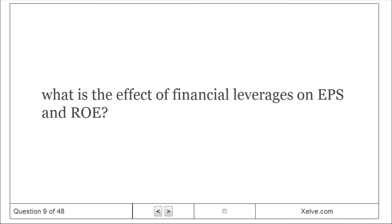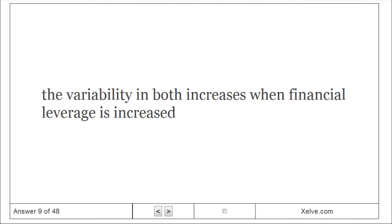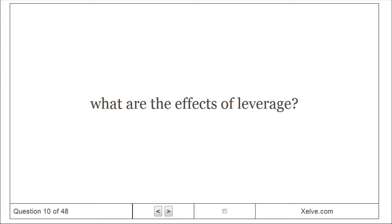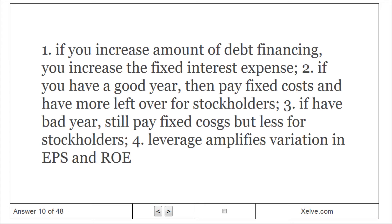What is the effect of financial leverage on EPS and ROE? The variability in both increases when financial leverage is increased. The effects of leverage are: one, if you increase the amount of debt financing, you increase the fixed interest expense; two, if you have a good year, you pay fixed costs and have more left over for stockholders; three, if you have a bad year, you still pay fixed costs but have less for stockholders; four, leverage amplifies variation in EPS and ROE.